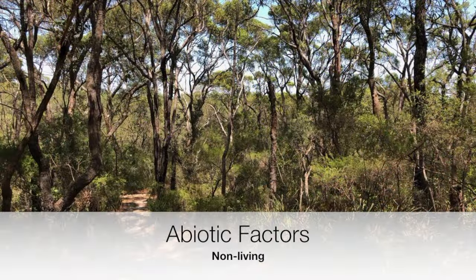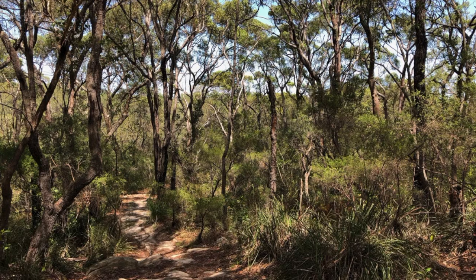Here are some of the abiotic or non-living factors that influence an ecosystem. Light intensity is the amount of visible light that is present in an area. Depending on where you are standing on the forest floor, the light may vary due to the canopy cover or shrub layer.